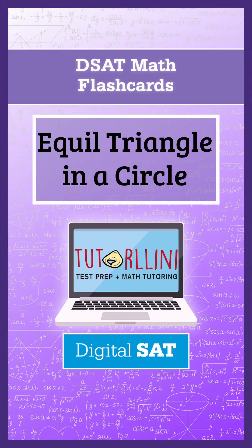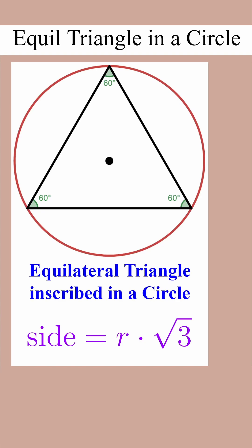Digital SAT math flashcards: equilateral triangle in a circle. When an equilateral triangle is inscribed in a circle, the side length is equal to the radius times the square root of 3.